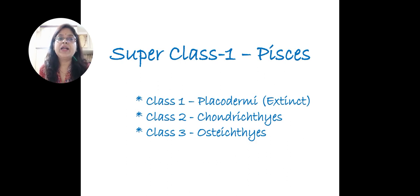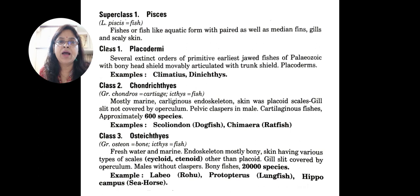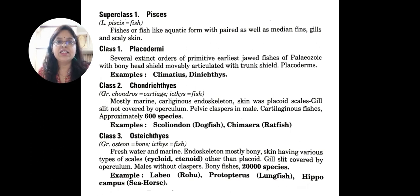Superclass Pisces is classified into three classes. Class 1 is Placodermi, Class 2 is Chondrichthyes, and Class 3 is Osteichthyes. Placodermi are extinct fishes. Common Placoderms include Climatius and Dinichthys. These two are examples of extinct fishes.